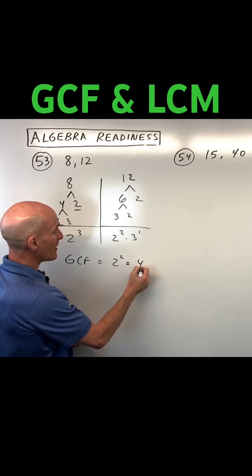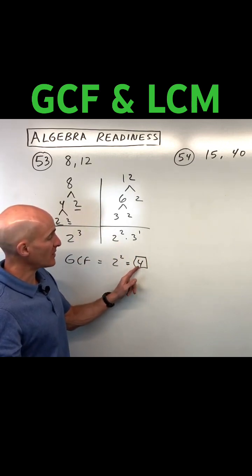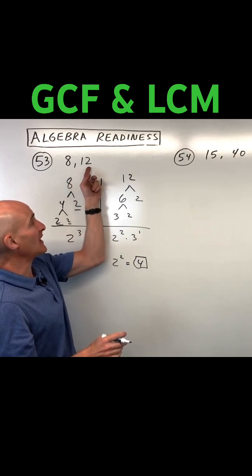So two squared is going to come out to four, so our greatest common factor is four. What that means is it's the largest number that goes into both eight and twelve evenly.